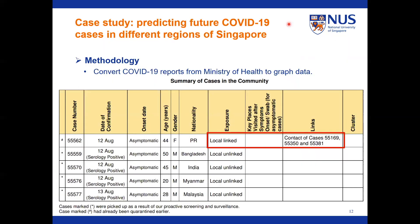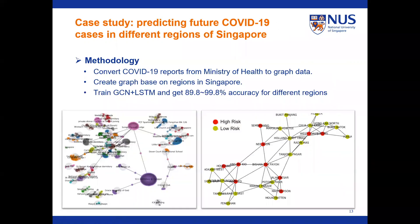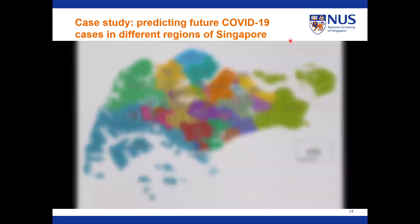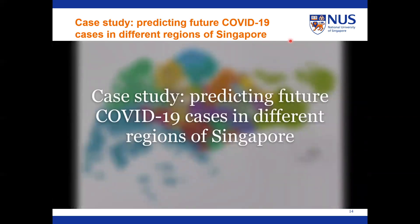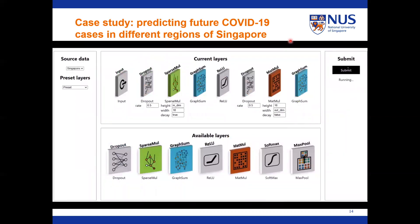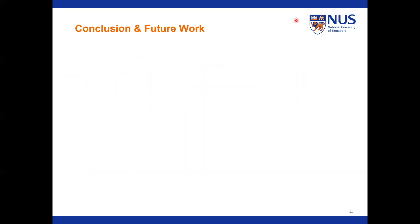Next, we briefly present how we use GQ to predict future COVID-19 cases in different regions of Singapore. The Ministry of Health releases details of newly confirmed cases every day and reports the links among cases. We convert the daily reports to graph-structured data in clusters and retrain the GNN model based on the geospatial regions of Singapore. We can use GQ's web-based API to train the model on these datasets. This model can also be applied to predicting other infectious diseases.